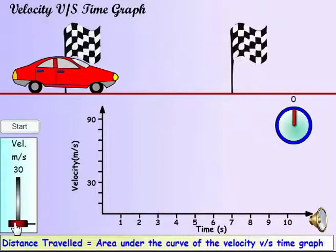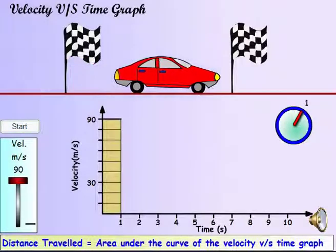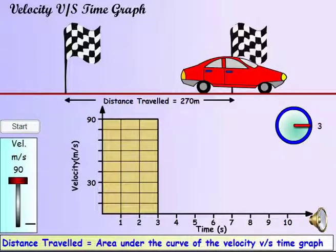At higher speeds, the graph is higher, but the time taken is less for the same distance. If you measure the area again, it should match the area computed when the velocity was lower.